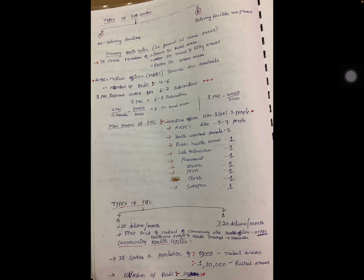The manpower at a PHC includes one or two medical officers (MBBS), three to four ANMs, a health assistant female and public health nurse, lab technician, pharmacist, driver, peon, clerk, and sweeper. PHCs are of two types based on deliveries: less than 20 deliveries per month, and more than 20 deliveries per month. The first point of contact of the community with a health professional is the sub-center.